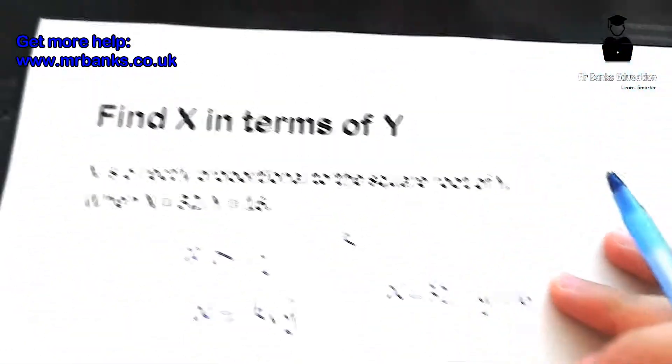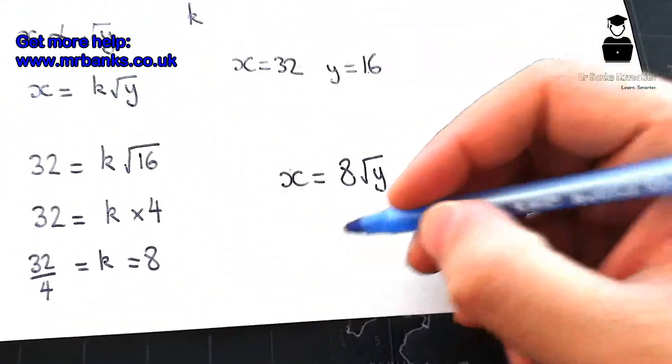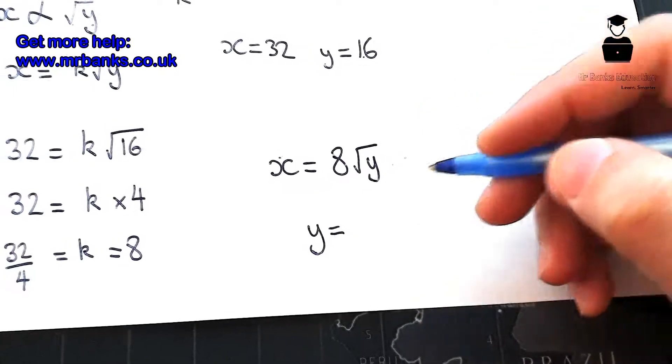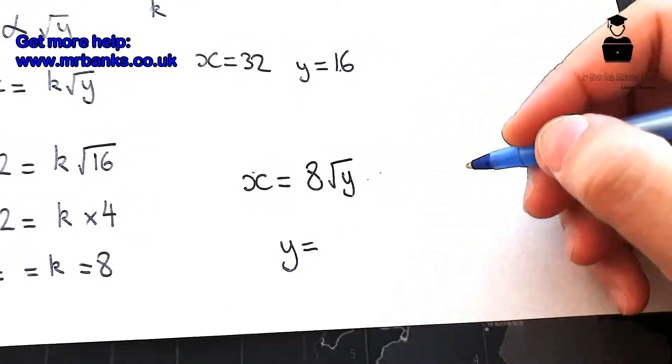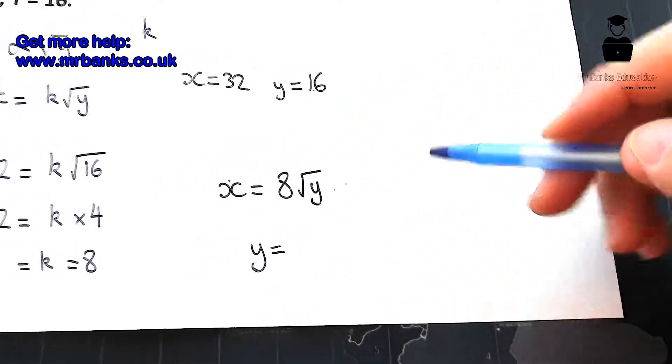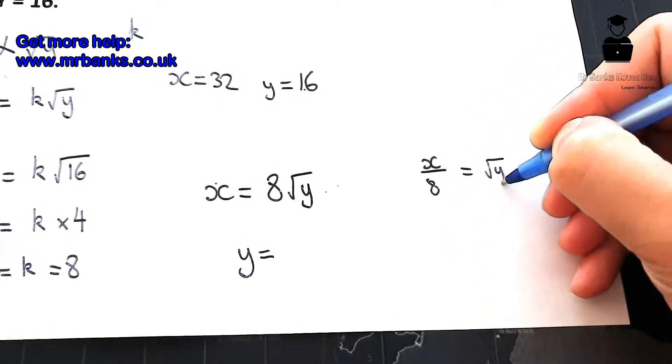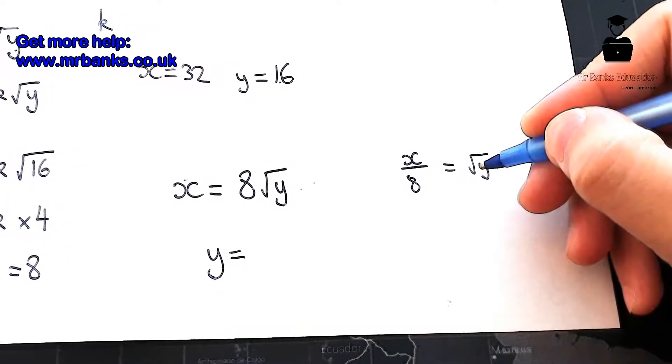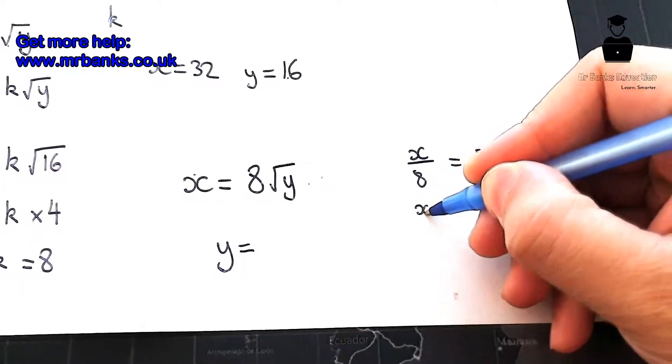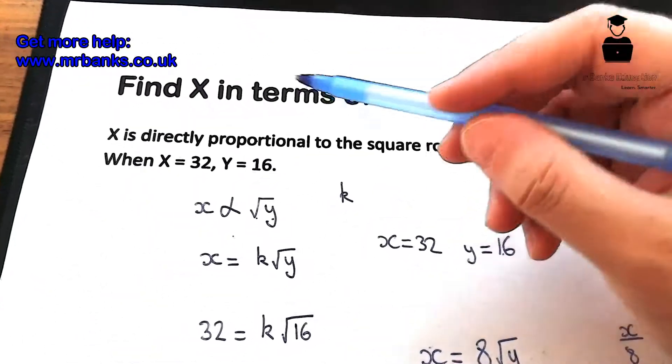Now if it said find Y in terms of X, the other way around, it would have had to start with Y equals. So if we want to rearrange that, we can actually rearrange that. I'll do that over here. So if X equals 8 root Y, that means X over 8 equals root Y. And then if we want to get from root Y to Y, we need to square it, so we square this side as well. So X squared over 64 equals Y.